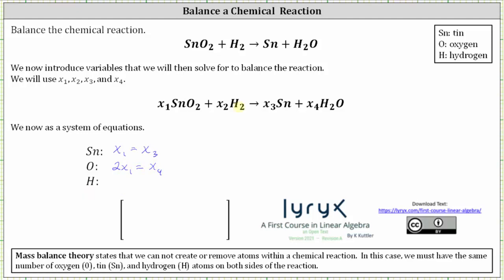Moving on to hydrogen, notice how we have two atoms of hydrogen on the left and two atoms of hydrogen on the right. And therefore, two times x sub two must equal two times x sub four, or two x sub two must equal two x sub four. From here, let's write these equations as homogeneous equations by setting the right side equal to zero. For the first equation, we subtract x sub three on both sides, which gives us x sub one minus x sub three equals zero. For the second equation, we subtract x sub four on both sides, which gives us two x sub one minus x sub four equals zero. For the last equation, we subtract two x sub four on both sides, which gives us two x sub two minus two x sub four equals zero.